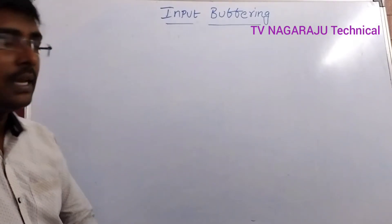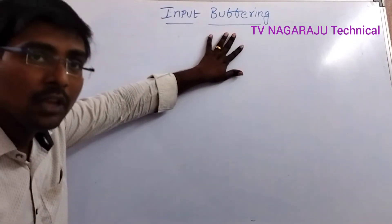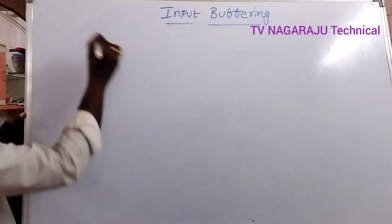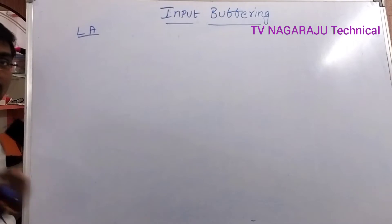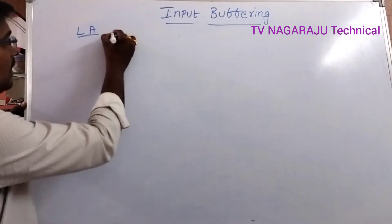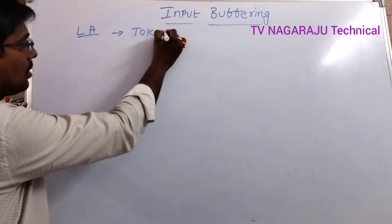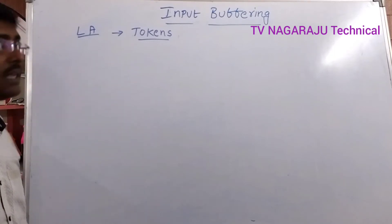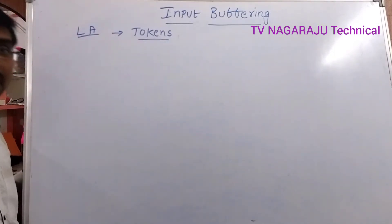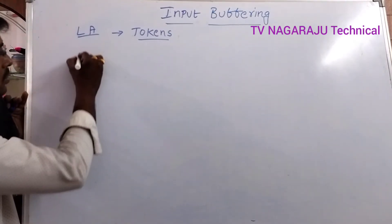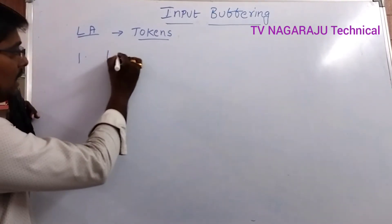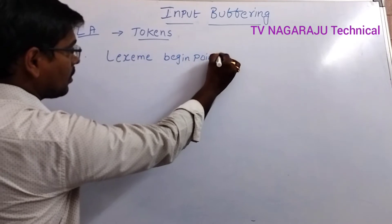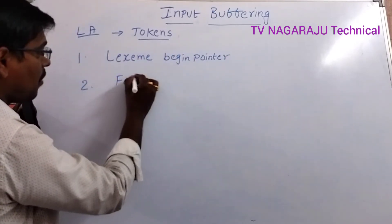Welcome to our channel. In this session, we will discuss the concept of input buffering. This concept comes under lexical analysis. The lexical analyzer reads the source program character by character and then generates tokens. To read those tokens, two pointers are used: one is the lexeme begin pointer, and the second one is the forward pointer.